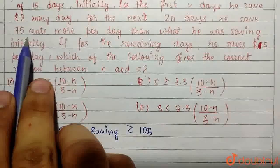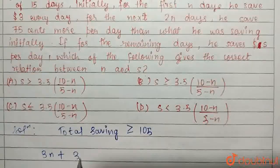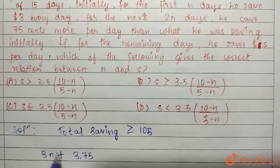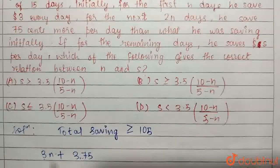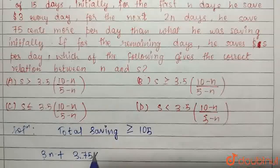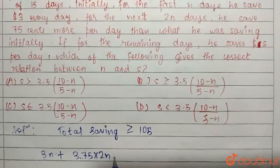He saves 75 cents more, so plus 3.75, because 3 dollars he was saving earlier and he saves 75 cents more than 3 dollars for 2N days.